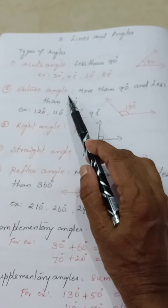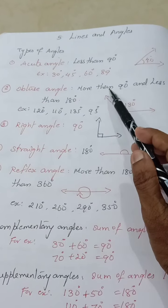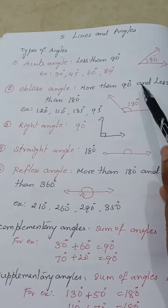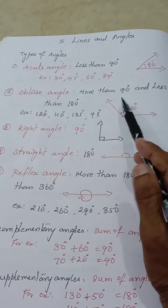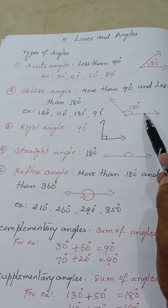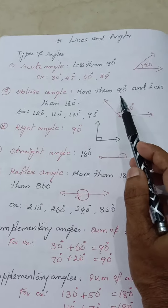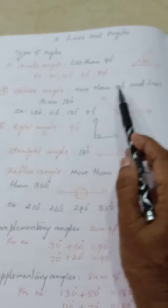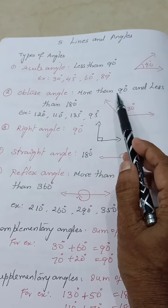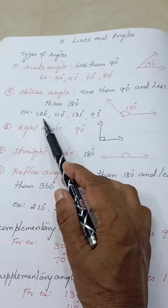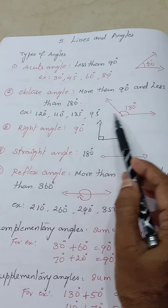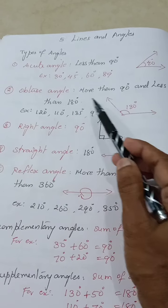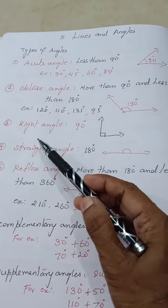The second type is obtuse angle. An obtuse angle is more than 90 degrees but less than 180 degrees. So all angles between 90 and 180 are obtuse — for example, 95, 110, 120, 135, up to 179 degrees.